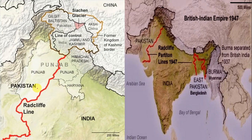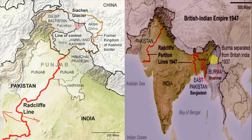The Radcliffe Line defines the boundary between India and Pakistan. This act also ended the status of what later became Bangladesh — which was East Pakistan at that time, while West Pakistan later became Pakistan.